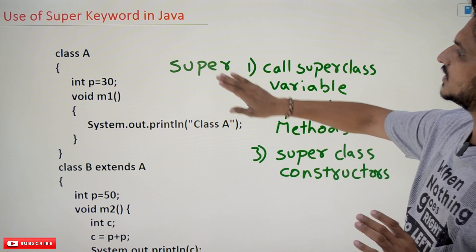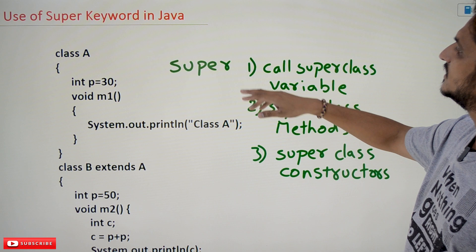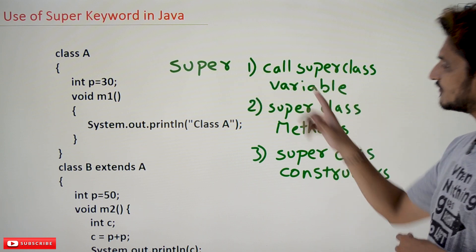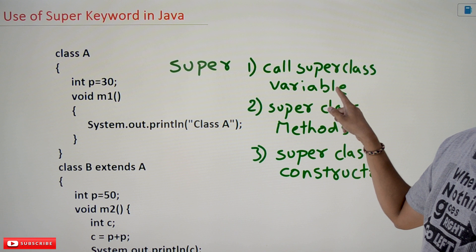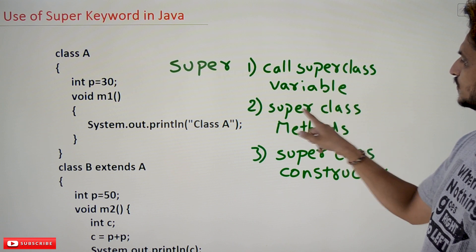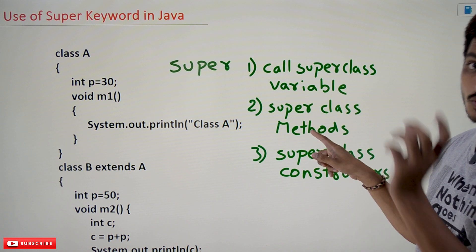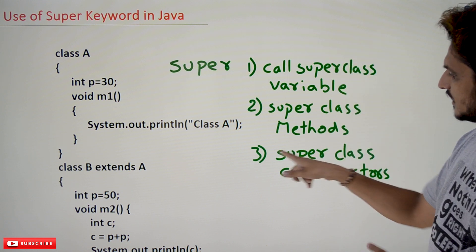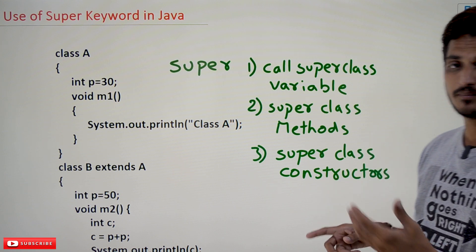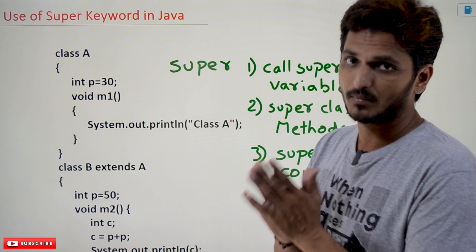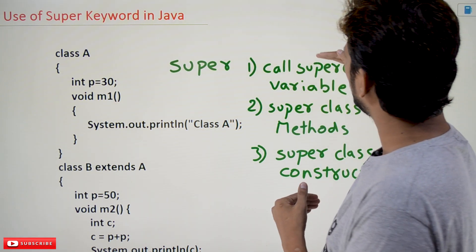The super keyword is used in three ways in Java. The first way is to call super class variables. The second is to call super class methods. The third is to call super class constructors. With examples we are going to understand these one by one, starting with how we are going to call the super class variables.